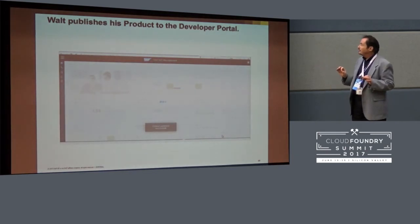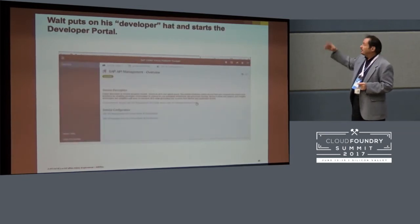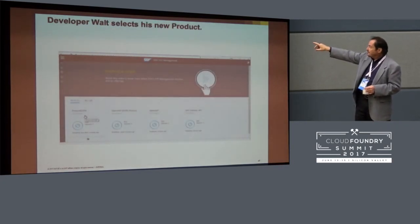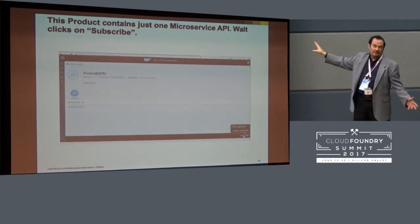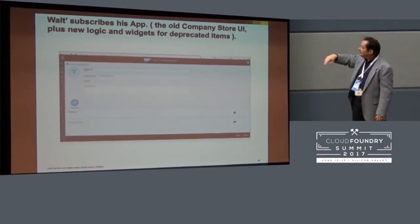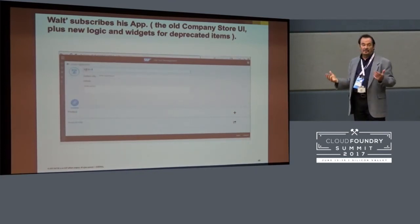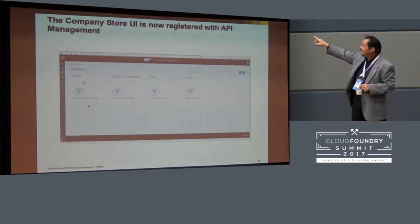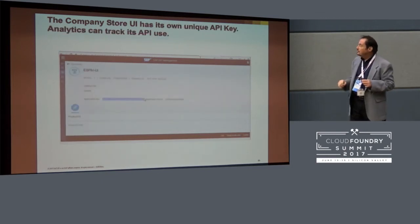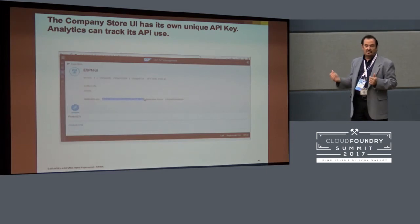The product is now published, which means he can work on it in the developer portal. He puts on his developer hat and opens the developer portal. He sees the product there and can click on it — typically there would be information about what this API does and any cautions about using it. He subscribes in the name of his application. That's the company store UI, which is now going to have additional logic and widgets for the deprecated items announcement and the exchange button. The company store UI is a registered API application, so if he clicks on that, he finds its very own unique API key.